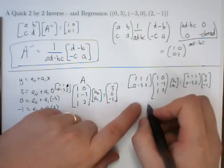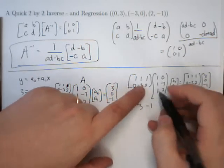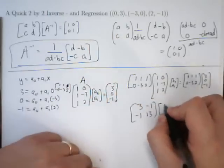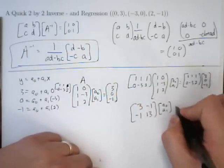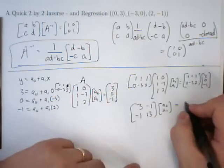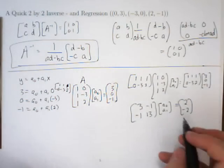So, we perform the multiplication. On this side we end up with a 3, a negative 1, a negative 1, and a 13. And then we have an A0, A1. On this side we end up with 3, 2, and a negative 2. That's the same thing we got from the last section.